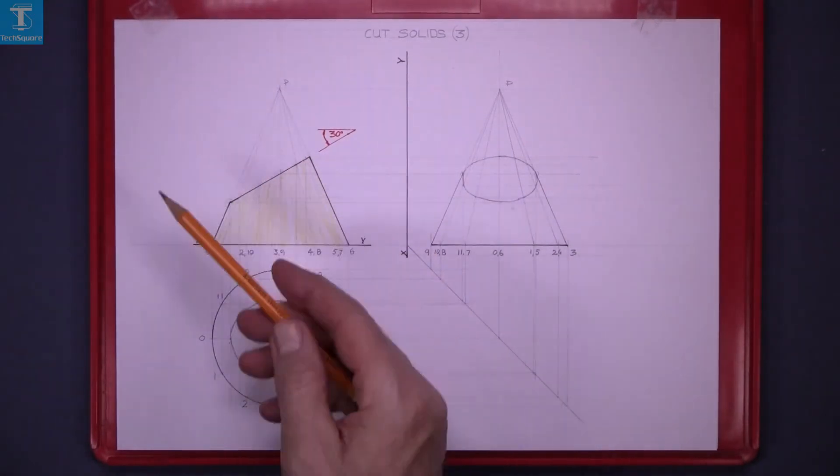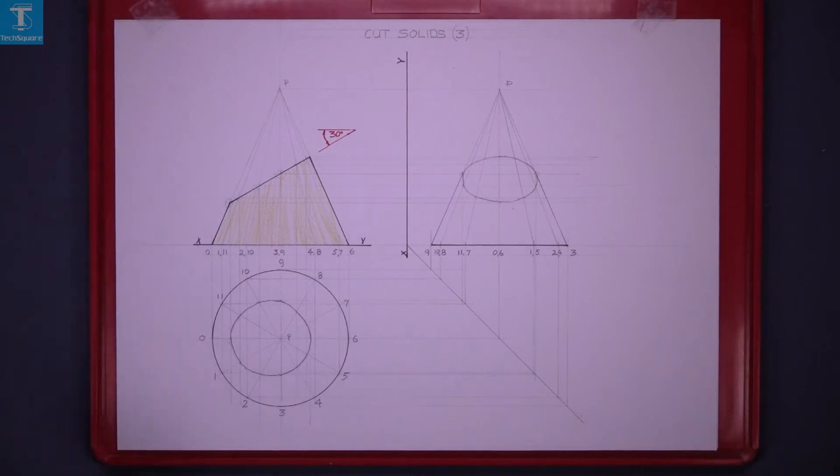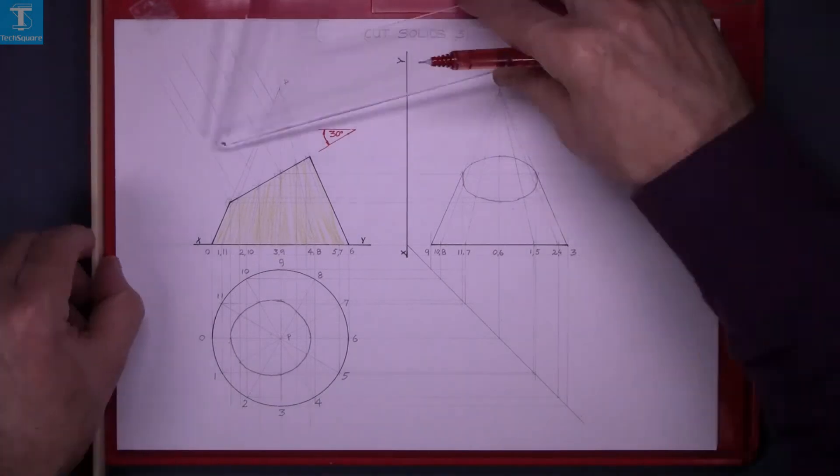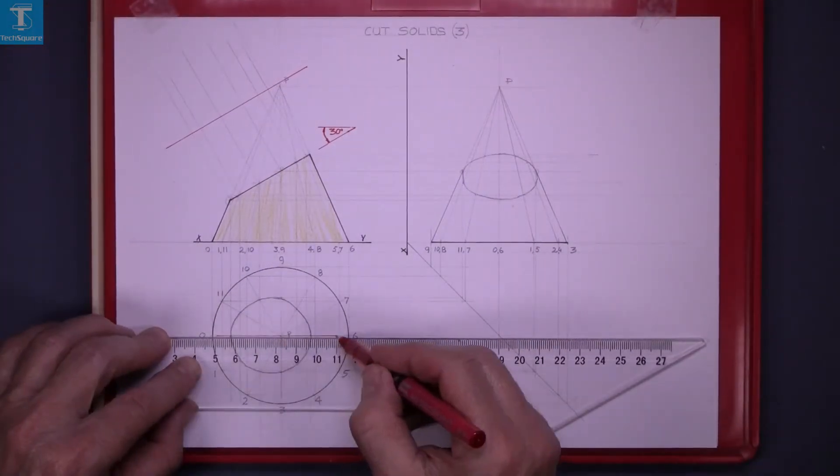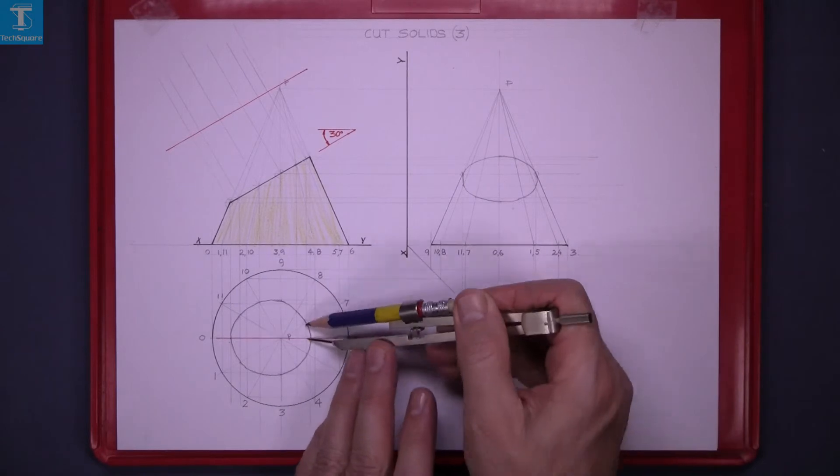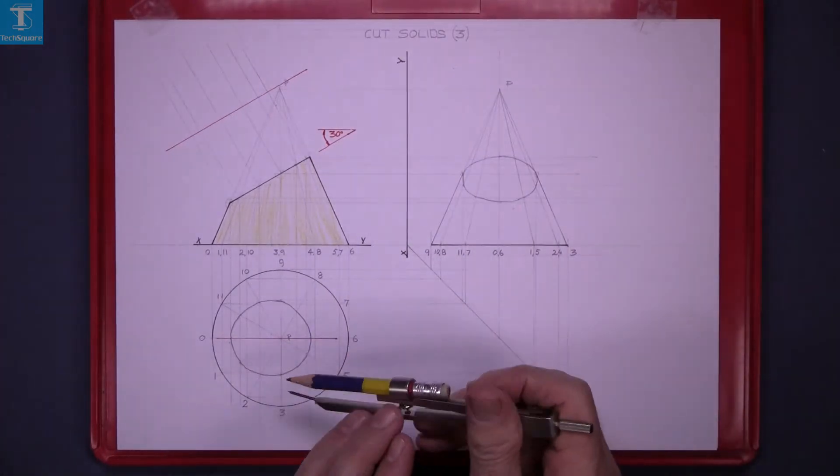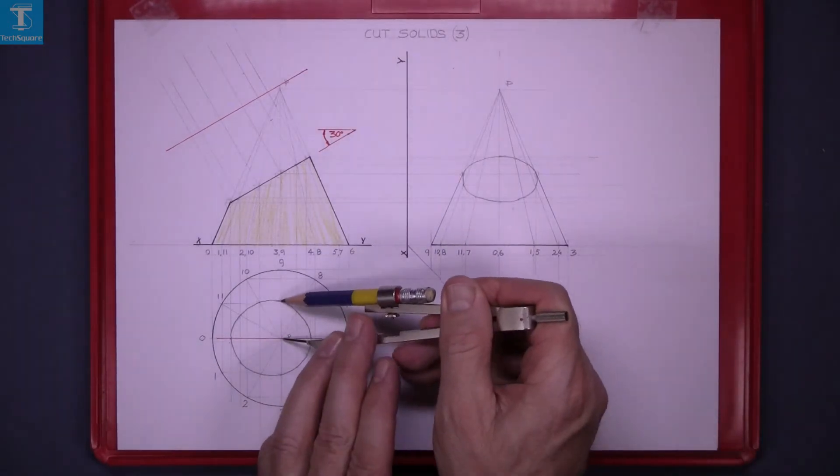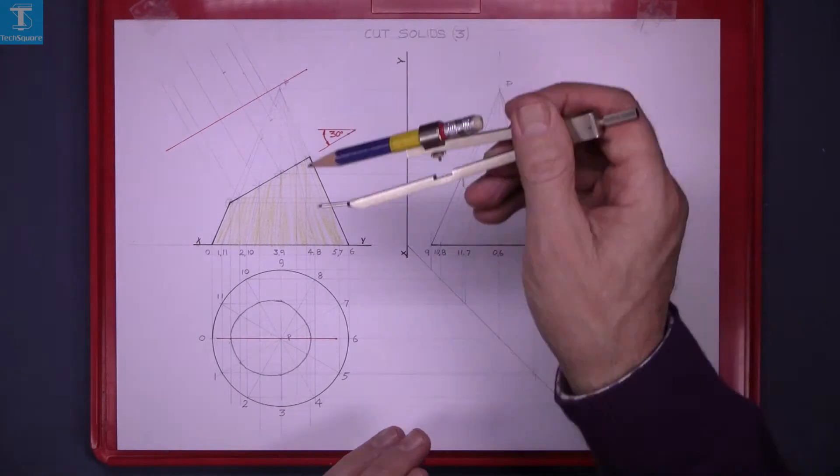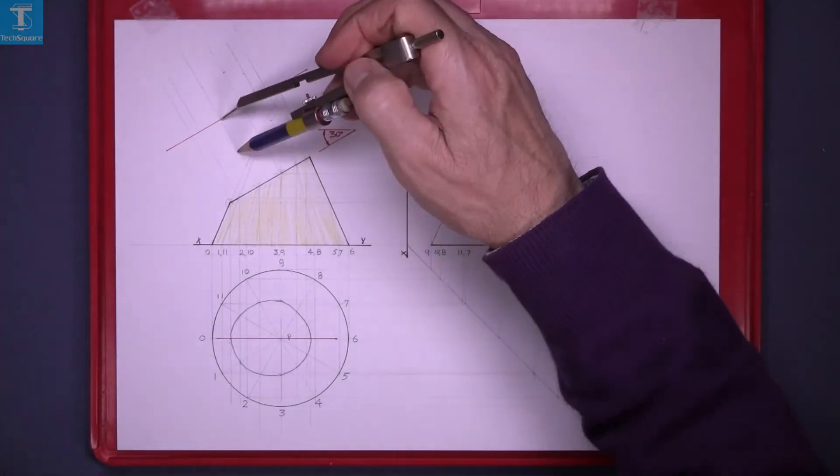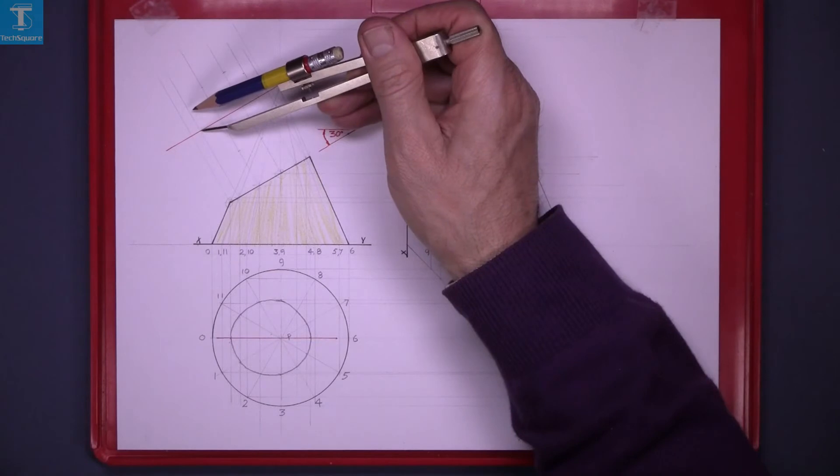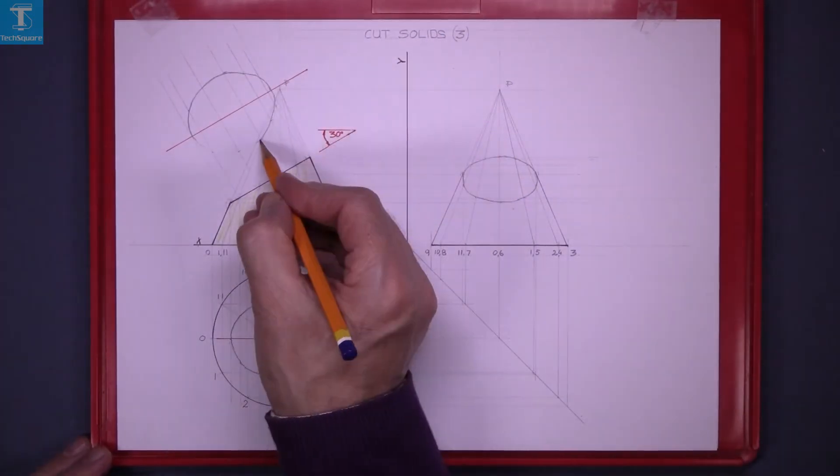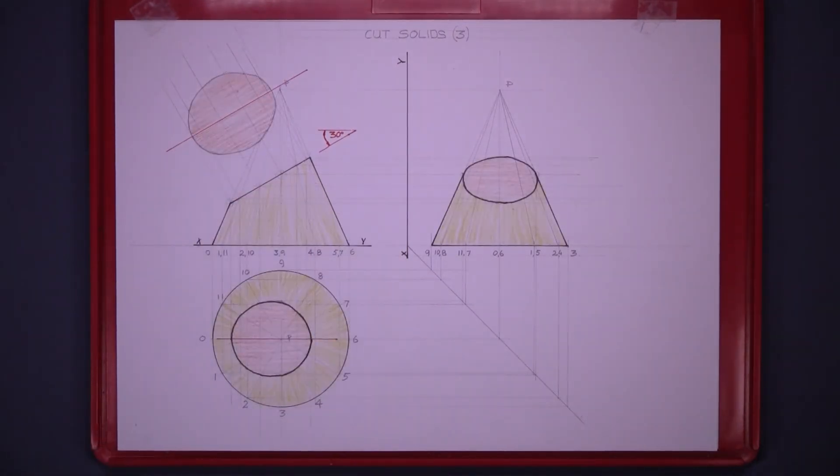Now we're asked to get the true shape of the cut, so I'm going to project at 90 degrees to the cut surface. I'm going to draw a red line here and I'll also draw the red line in plan. Take the distance in the plan and mark them up on the new view, and that is the true shape of the cut surface. And that's cut solids three complete.